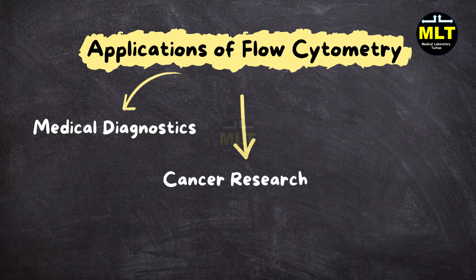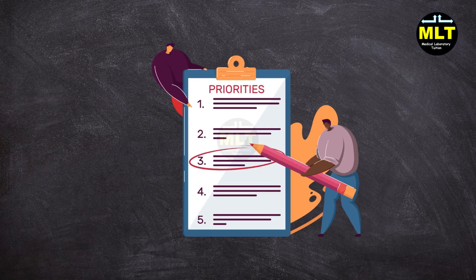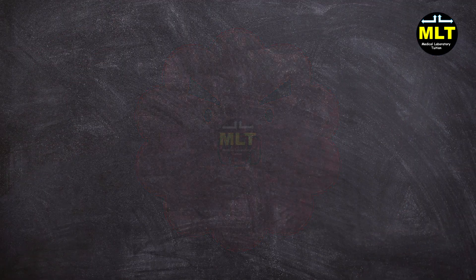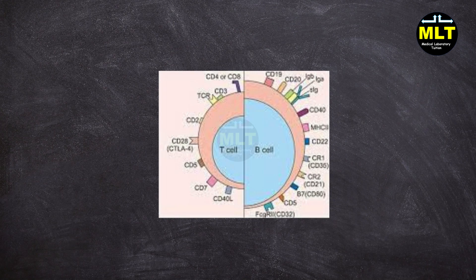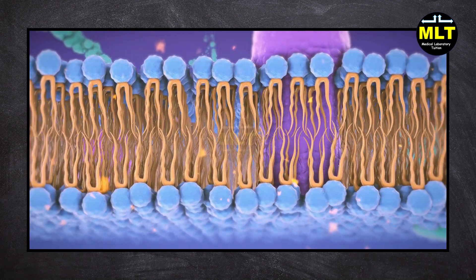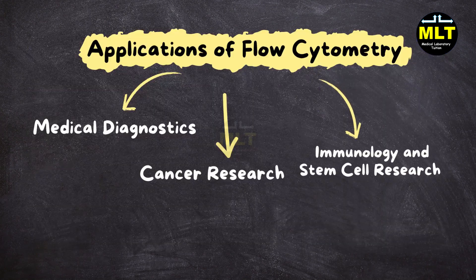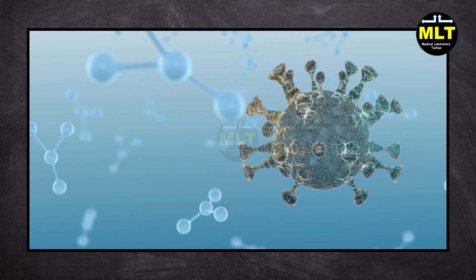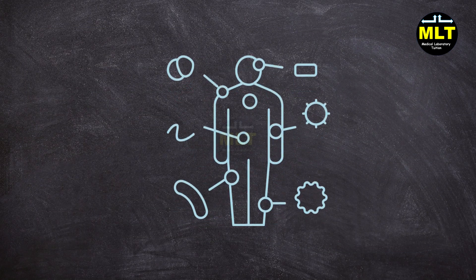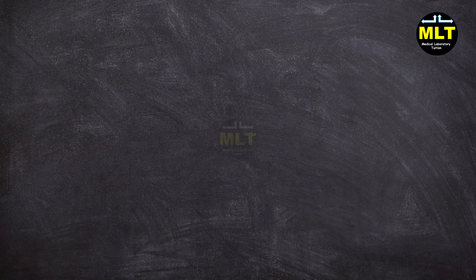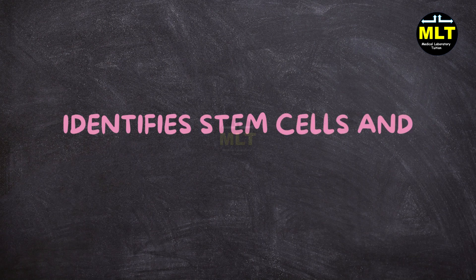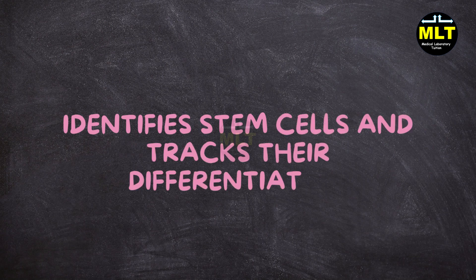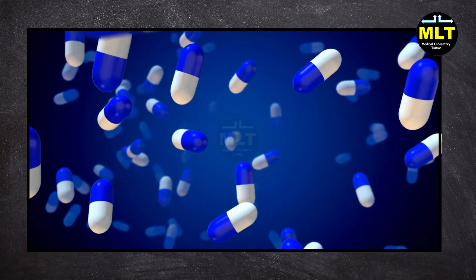In cancer research, flow cytometry plays a critical role in identifying tumor cells. Specific cell markers can reveal cancerous cells, which is especially important in personalized medicine. In immunology, scientists analyze immune cell responses, helping in vaccine research and autoimmune disease studies. Flow cytometry also identifies stem cells and tracks their differentiation, aiding research into regenerative medicine.